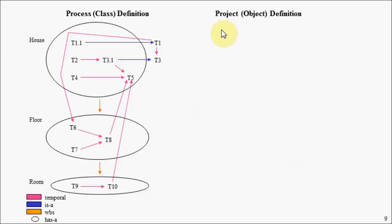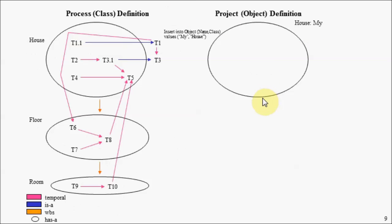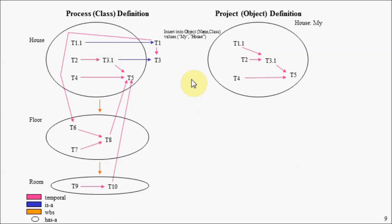Let's assume we would like to create a project plan by instantiating our process definition. We first instantiate our house entity, calling this instance 'my house' — name 'my' of type 'house'. What TCSQL will do behind the scenes is instantiate all of the tasks that define our house entity. Notice that what appears in the instance is slightly different from the template because in our template we had a temporal relationship between general tasks. When we instantiated this entity, TCSQL was smart enough to inherit that behavior, so now we have a temporal relationship between task T1.1 and task T3.1.